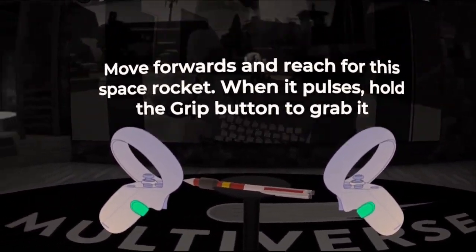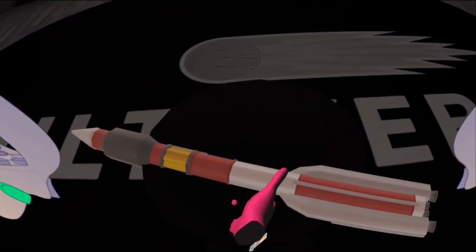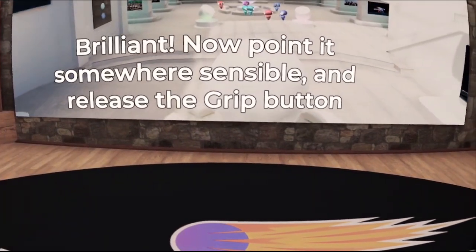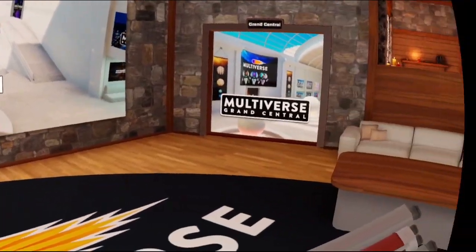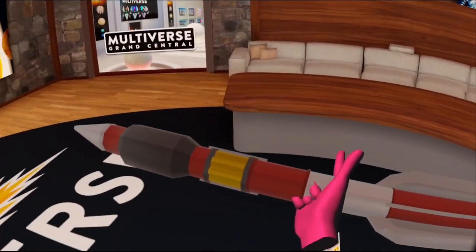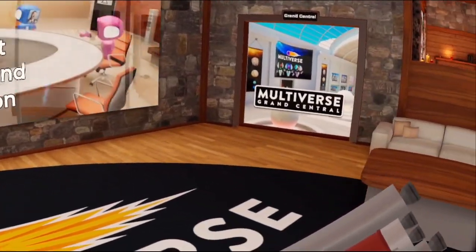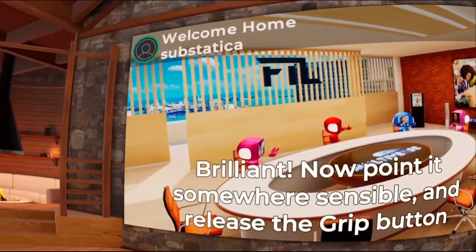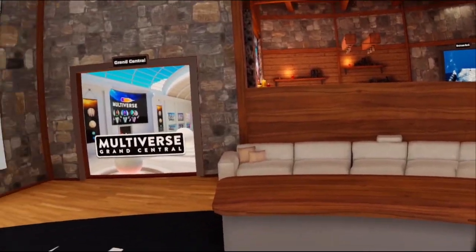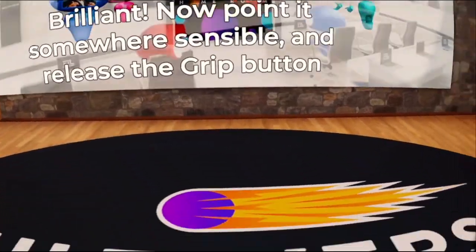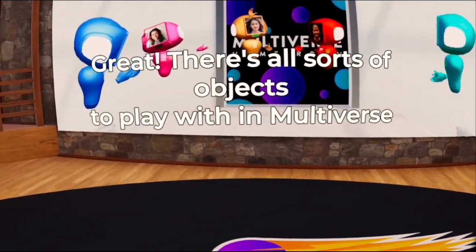Move forward and reach for the space rocket. When it pulses, hold the grip button to grab it. I didn't wait for it to pulse. Brilliant. Now point it somewhere sensible and release the grip button. Sensible? I'm not sure what would be the sensible target in here for a rocket. Are these different multiverses? I'm not sure. Okay. Great! There's all sorts of objects to play with in multiverse.